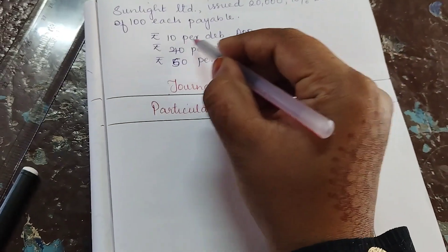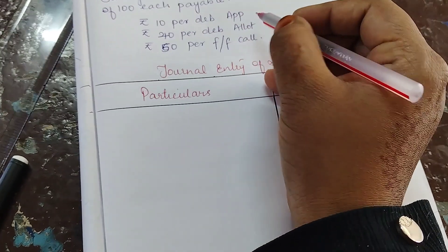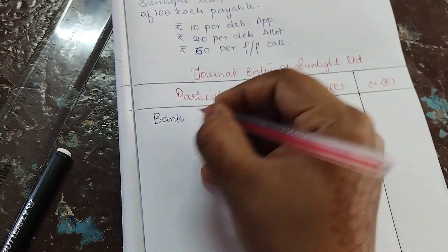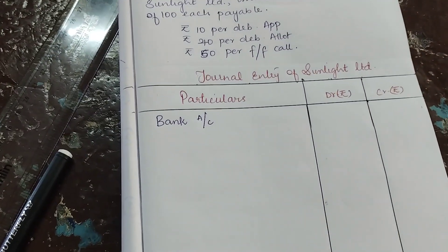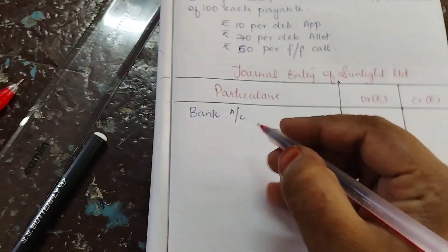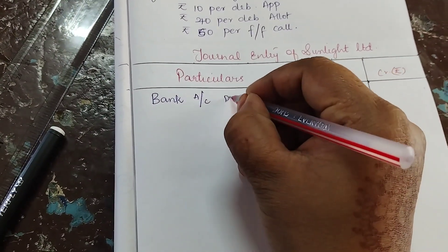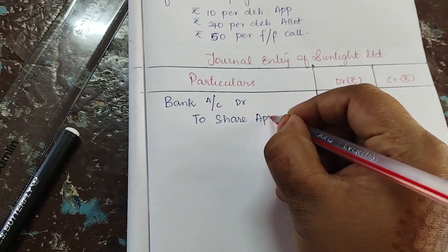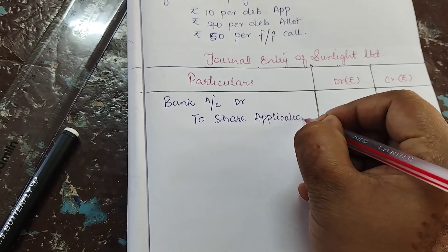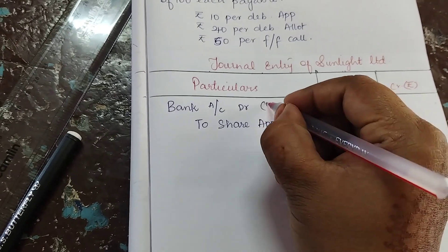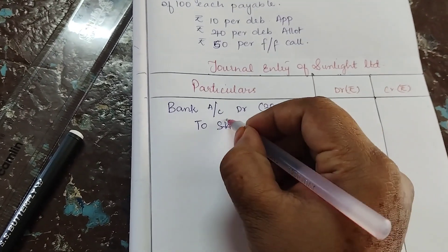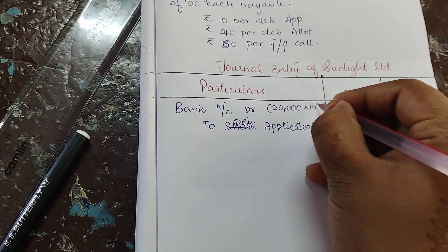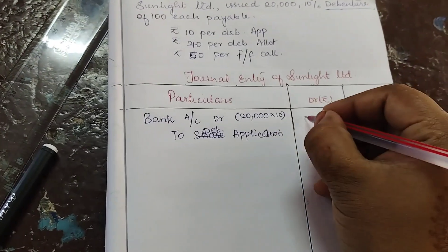The first entry is for ₹10 per debenture on application. When you are issuing the application and receiving money, your first entry will be: Bank Account Dr. to Debenture Application Account. Since it is 20,000 debentures into ₹10, that equals ₹2 lakh rupees.